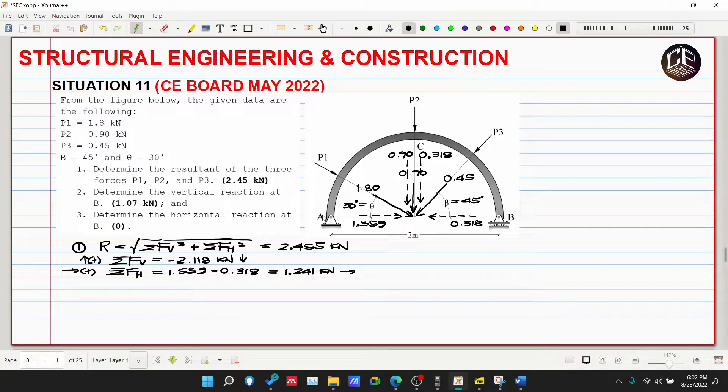Ang direction nito is downward to the right. Sa board exam hindi naman usually pinapahanap pero at least kung sakali mang i-require yung direction, ayan tinuro natin kung saan magagaling yung direction ng resultant. Ulitin nyo lang or balikan yung concept ng resultant. Kapag sinabi natin yung resultant, yun yung effect ng force system in terms of vertical and horizontal, so ibig sabihin kung ano ang direction ng vertical and horizontal natin, yun din yung magiging direction ng ating resultant.